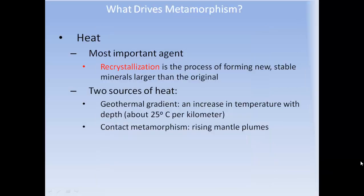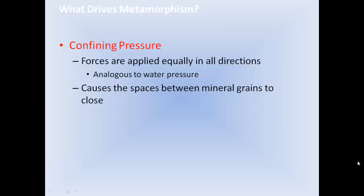Heat is the most important agent, driving recrystallization — the process of forming new, stable minerals larger than the original. There are two sources of heat: one, the geothermal gradient, which is an increase in temperature with depth at about 25 degrees Celsius per kilometer, and contact metamorphism, where rising hot mantle plumes warm up the rock they travel past.